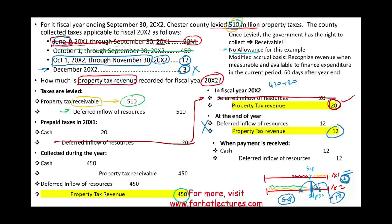Therefore, property tax revenue for X2 is: $450 million plus $20 million equals $470 million, plus $12 million equals $482 million. Property tax revenue reported for year X2 is $482 million.